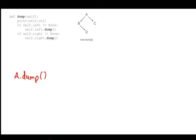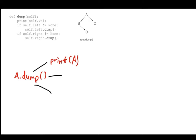The first thing is print — so we print A. Then both left and right are not None, so we make two recursive calls. self.left is B so we call b.dump(), and self.right is C so we call c.dump(). So the first level produces: print A, then b.dump(), then c.dump().